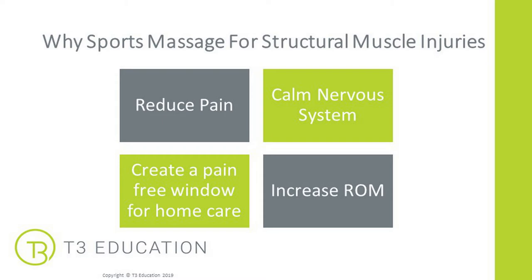Our four main goals for structural muscle injuries are: reduce pain for the client by calming the nervous system down; build in exercises to build strength after the injury; increase range of movement; and create that pain-free window for home care — all about reducing nervous system reactivity to help clients get back to movement as quickly as possible.